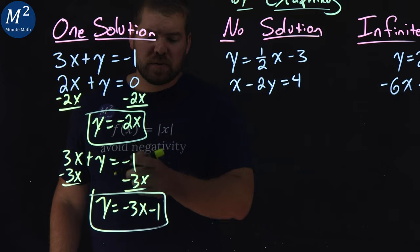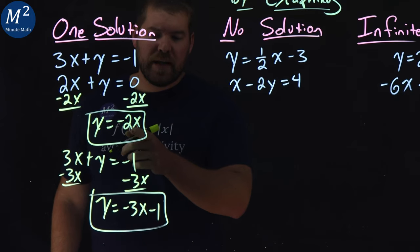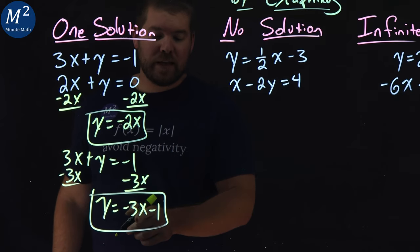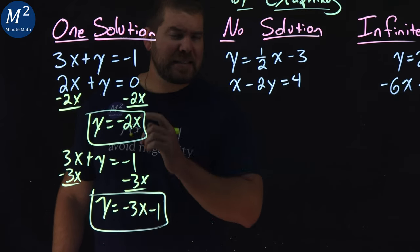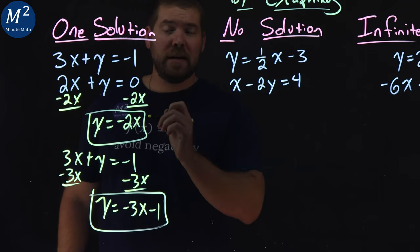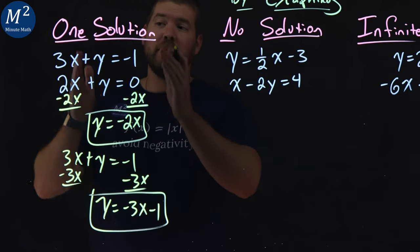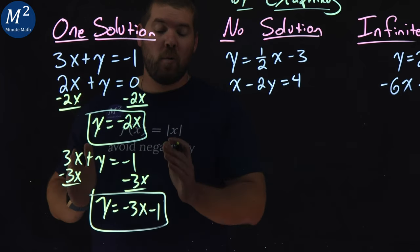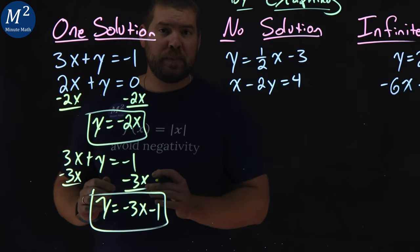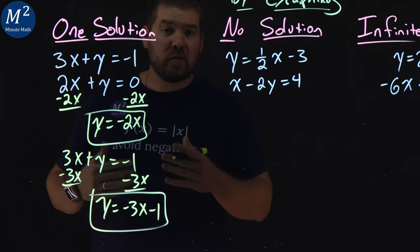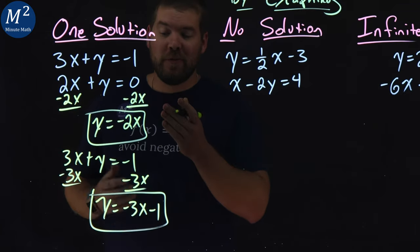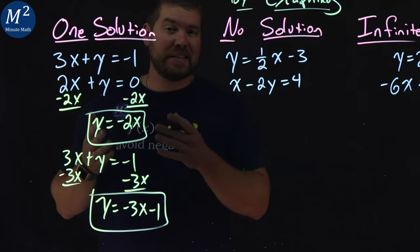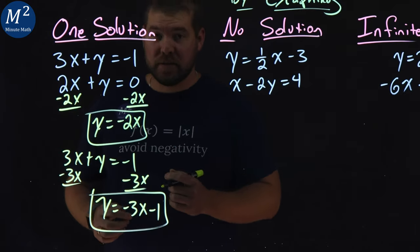Notice the two slopes: negative 2 and negative 3. That's going to be a key indicator that we have one solution. Let's hop on to Maple Learn and graph these two equations to see where they intersect.